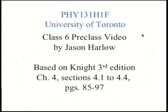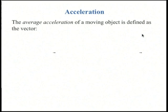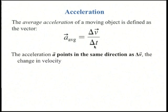So we begin chapter four on kinematics. The average acceleration of a moving object is defined as delta v divided by delta t. This acceleration vector points in the same direction as the vector delta v, the change in velocity.